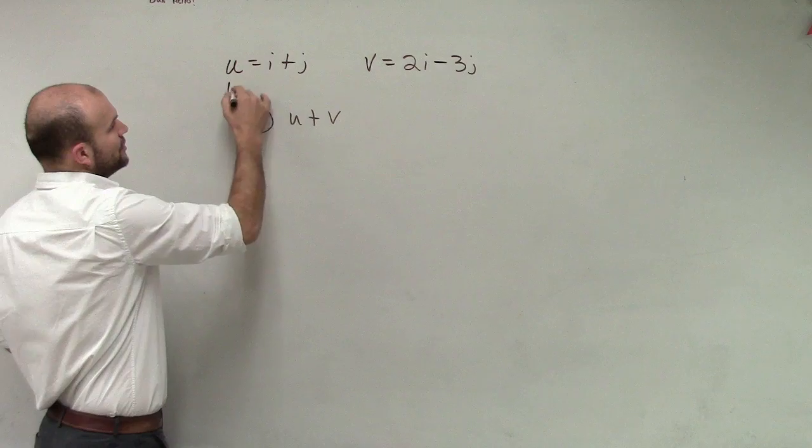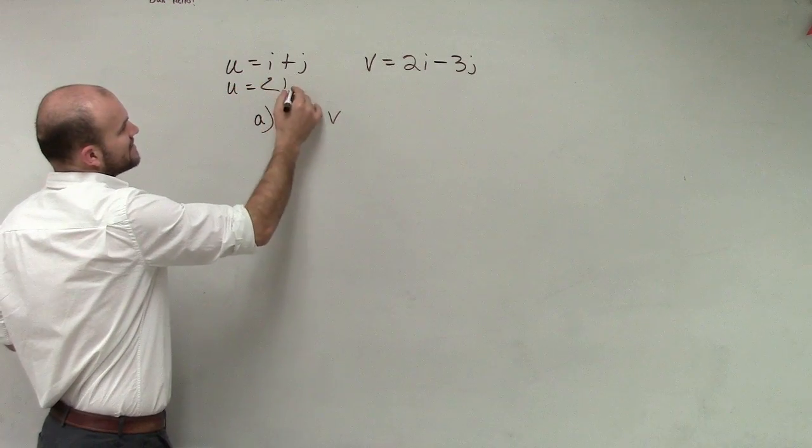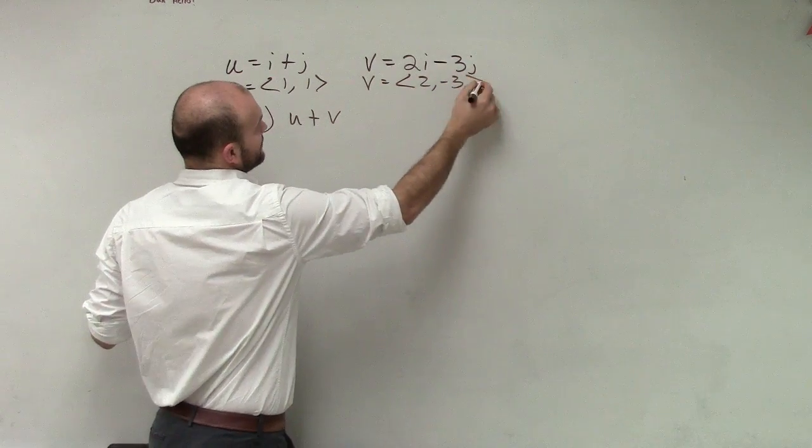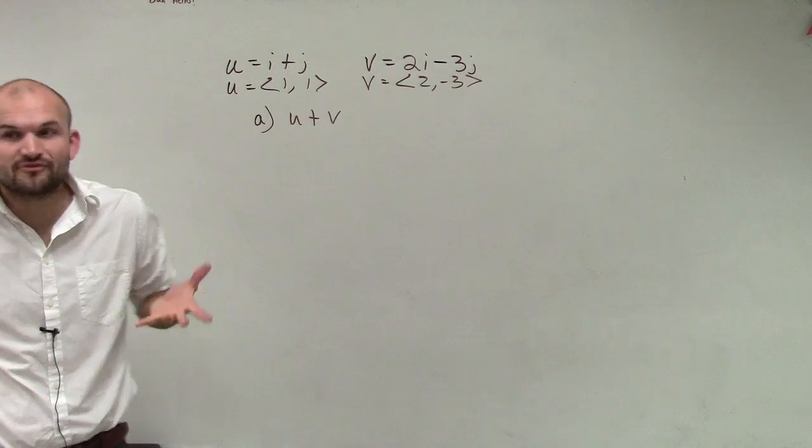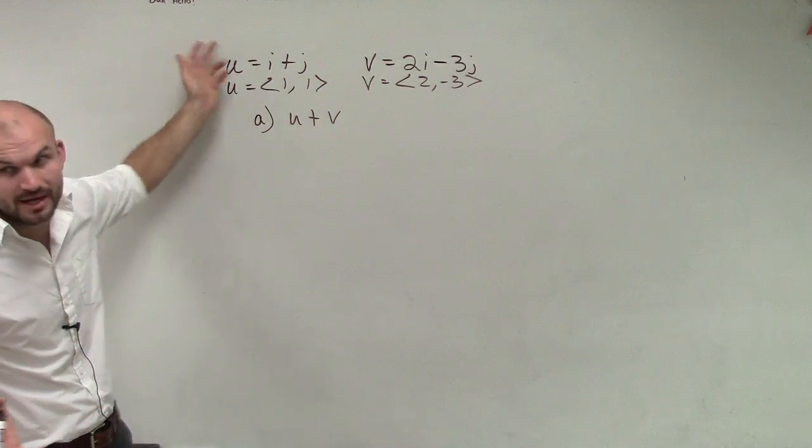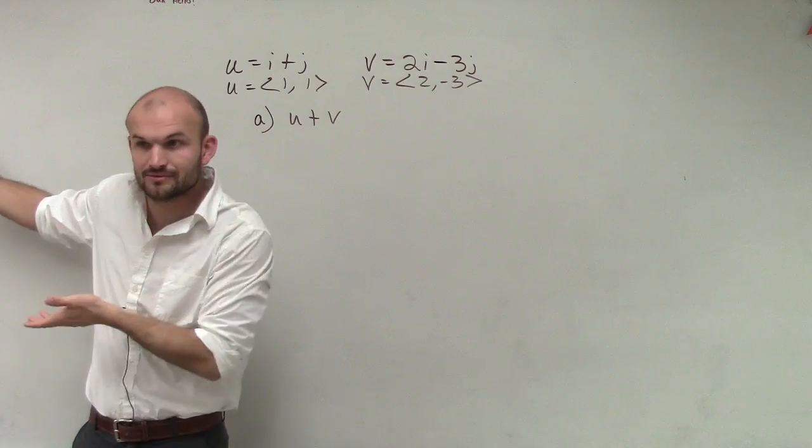We can also say that u is written as a vector as 1 comma 1, and v is written as a vector as 2 comma negative 3. So this might be helpful when you're first getting started. You can either write it as component form or as your linear combination. That's what I just spent the last five minutes reviewing.